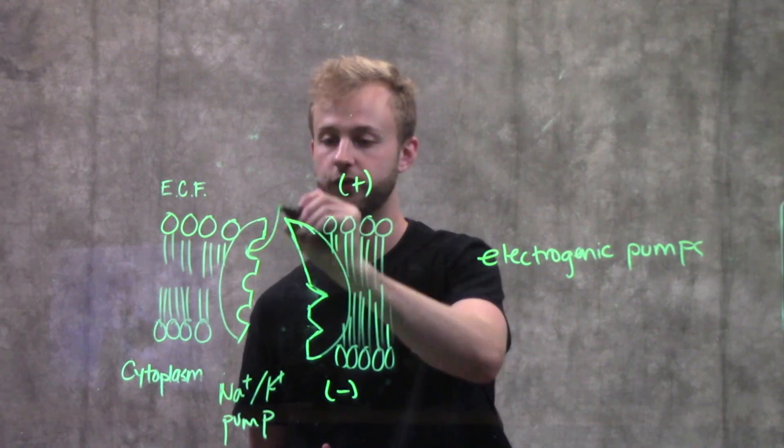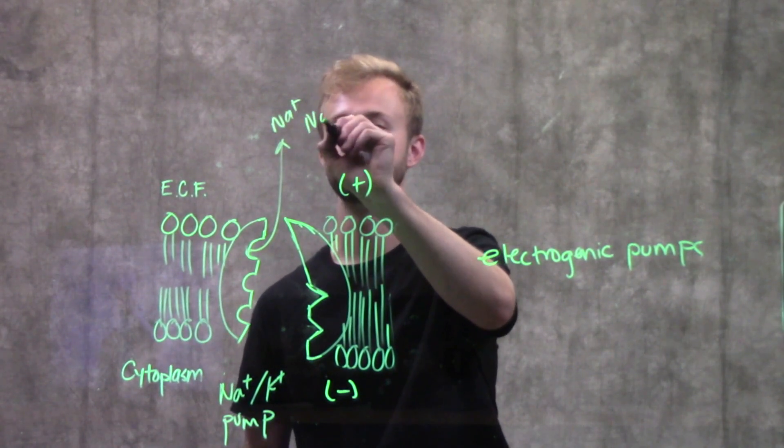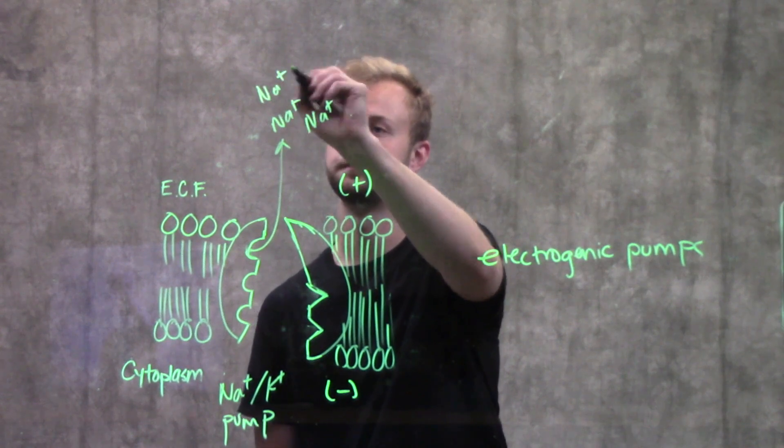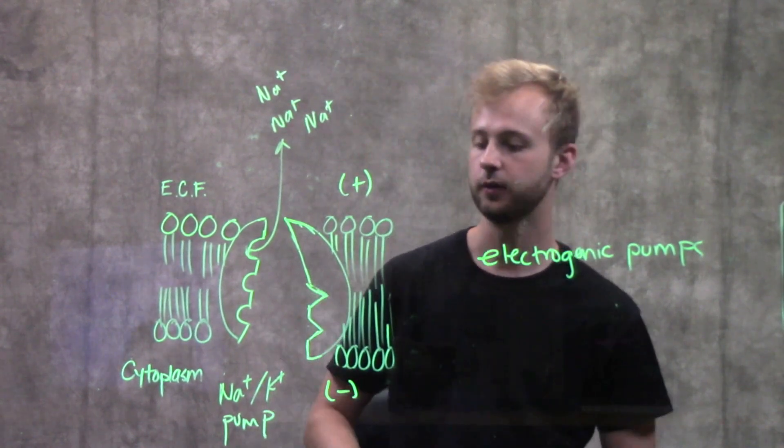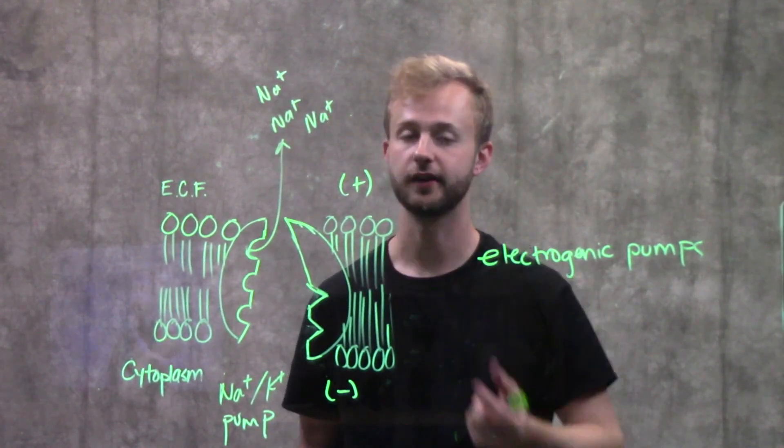Just to review very briefly, it's going to pump sodium outside of the cell and it will pump potassium into the cell. And so that's going to help generate these different charges on either side of this membrane.